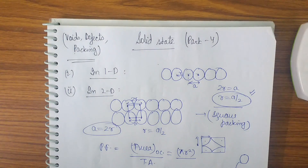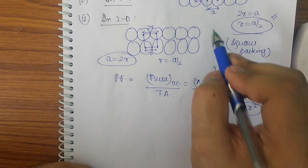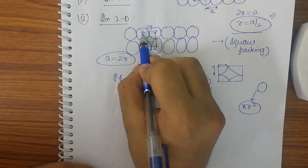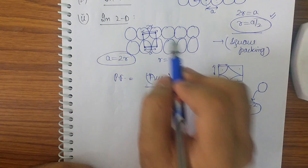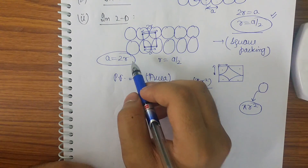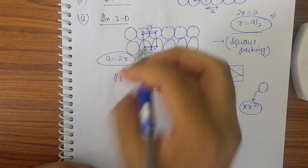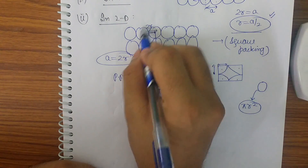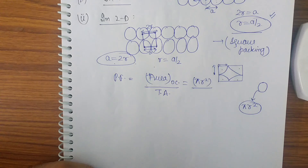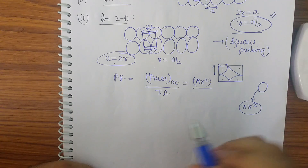Now let's go to two-dimensional packing. The layers are in the form of circles placed next to each other. Since it is two-dimensional, joining the points gives a square figure — this is also known as square packing. If the side is a and radius is r, then a = 2r, so r = a/2. The packing fraction is area occupied by spheres upon total area.